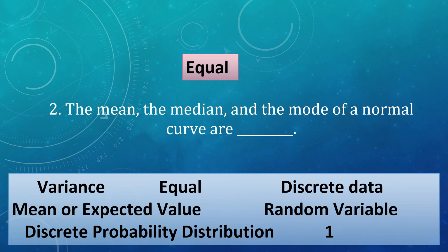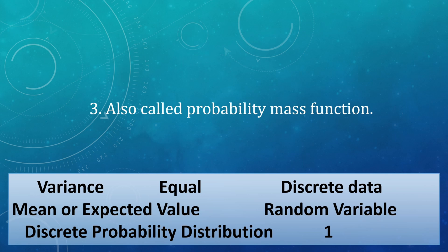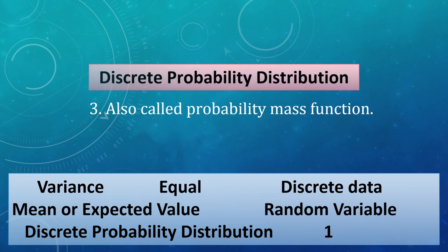Next, it is also called as the probability mass function. Choose your answer. Are you done picking your answer? So the answer is discrete probability distribution.